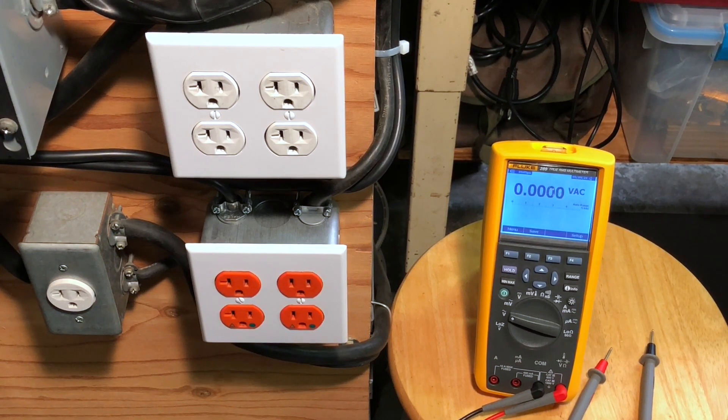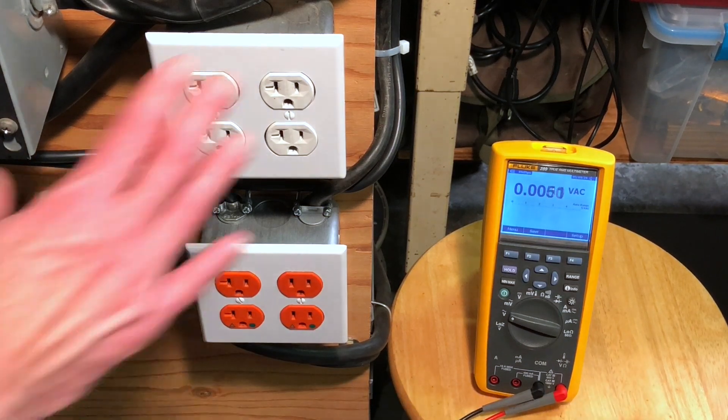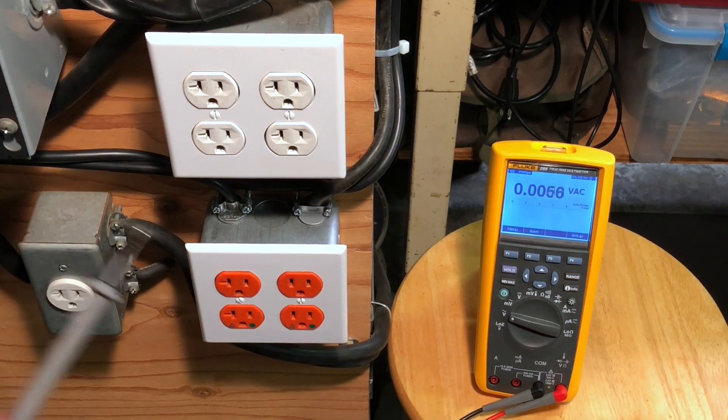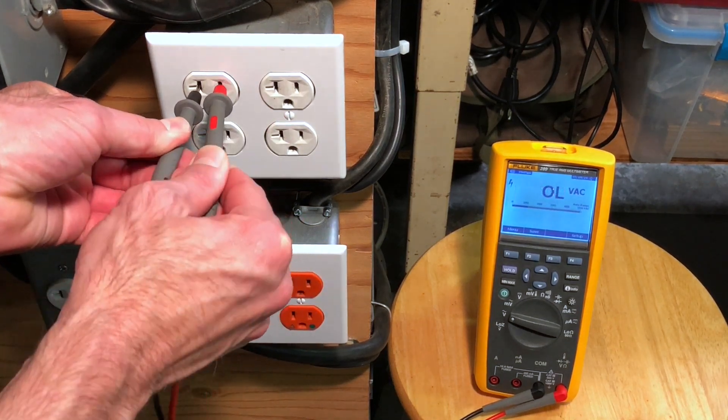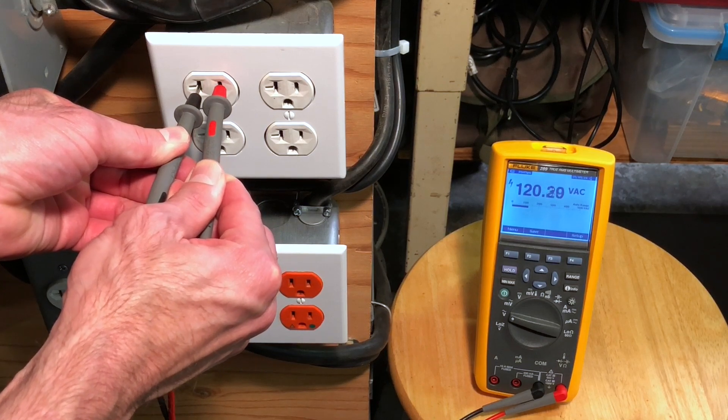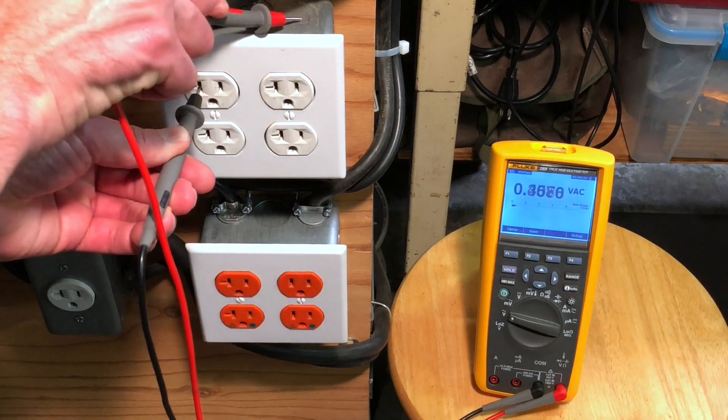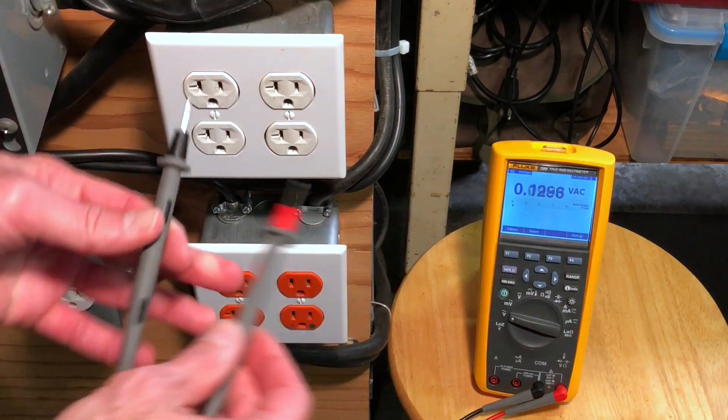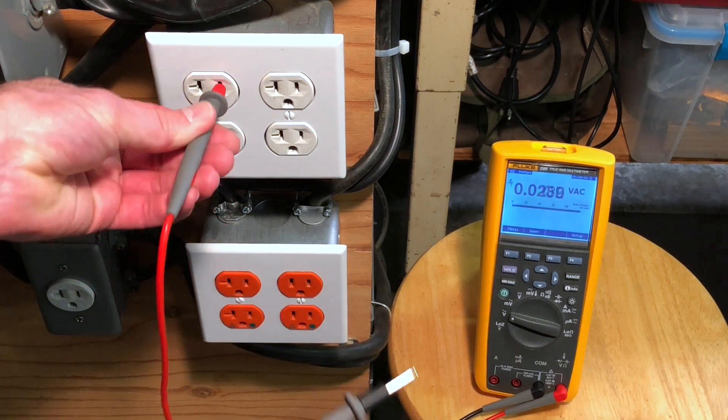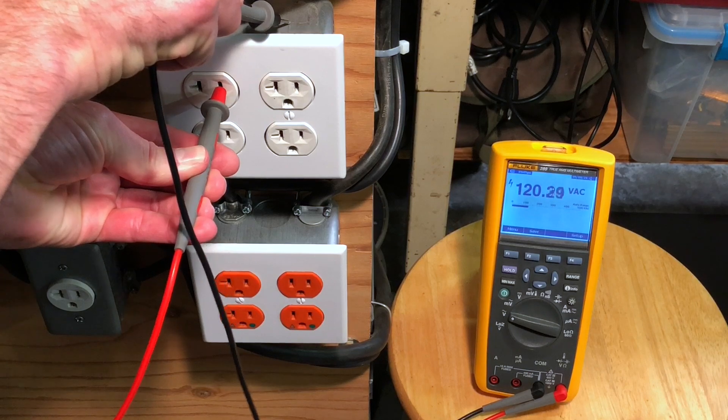Let me grab my Fluke 289 sitting right here with these test probes and take a few voltage readings around here to see what's going on. If I just probe into the outlet like so, you can see we have right there 120 volts, exactly what you'd expect. If I keep from the neutral and go to earth ground right here, nothing, and that's perfectly correct.